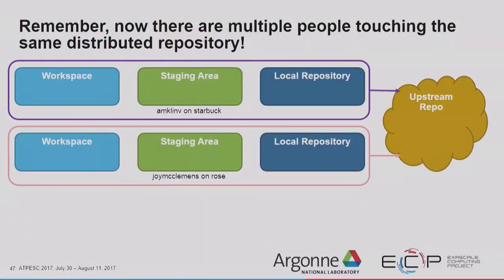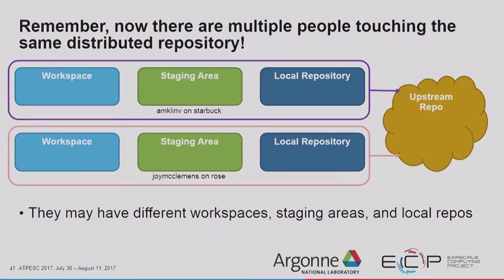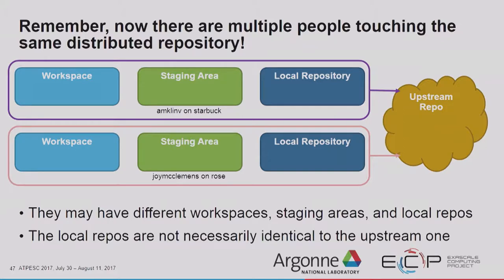So now we're going to talk about distributed Git. When we talk about distributed Git, there are multiple people touching the same distributed repository. I'm amclinv on my machine Starbuck — I have a workspace, a staging area, and a local repository. Somebody else is going to help me with my code: Joy McClemmons on her machine Rose. Keep in mind we might have different workspaces, staging areas, and local repositories on our two machines, and those two local repositories are not necessarily identical to the upstream one.